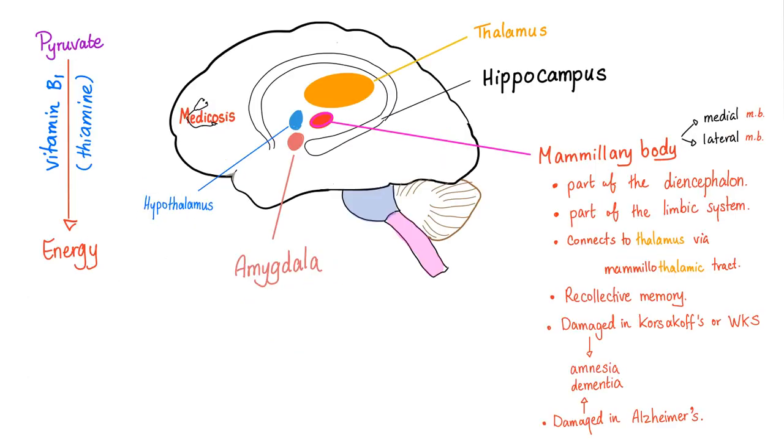As you know, pyruvate—in order for pyruvate, which comes from glucose through glycolysis, to become energy, we need vitamin B1. This is also known as thiamine.